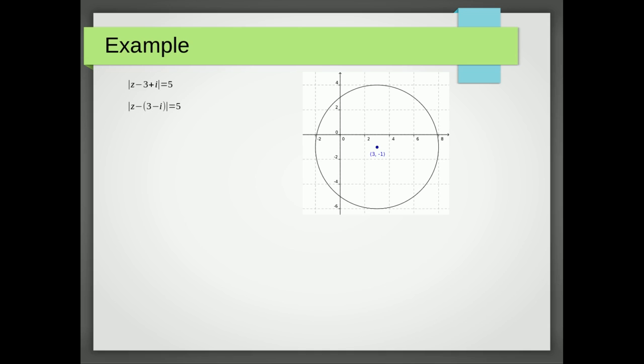And using the equation of a circle we get the equation x minus three squared plus y plus one squared equals 25.